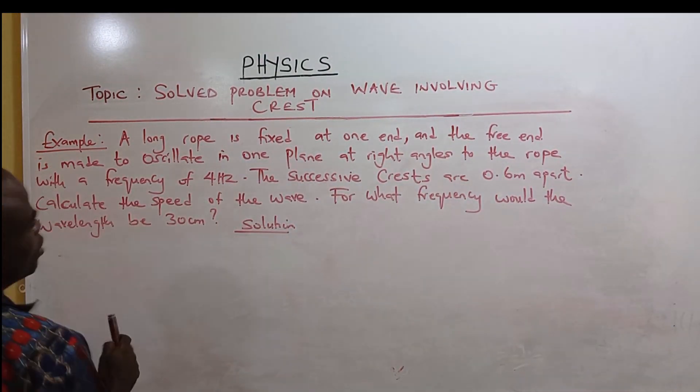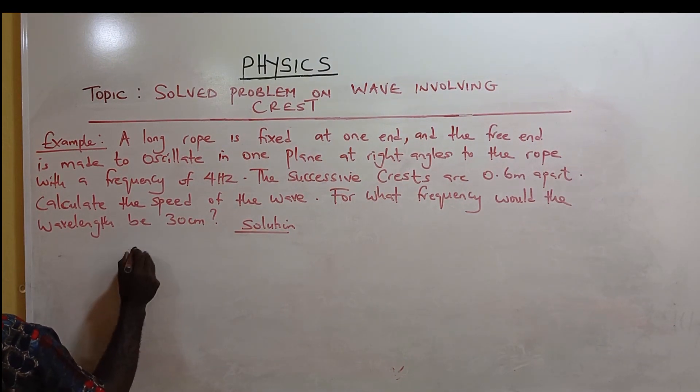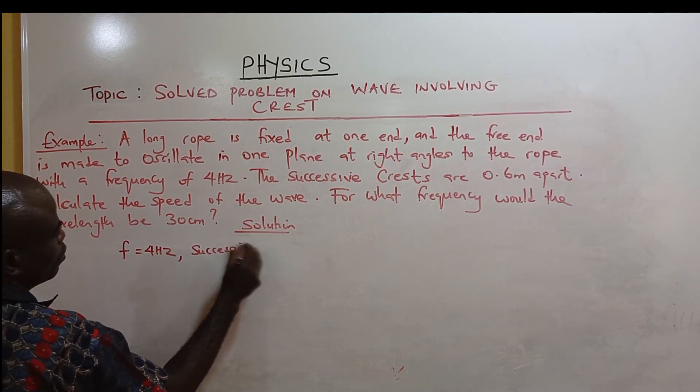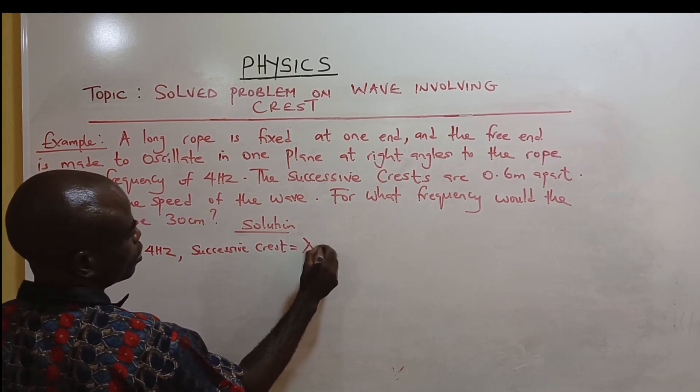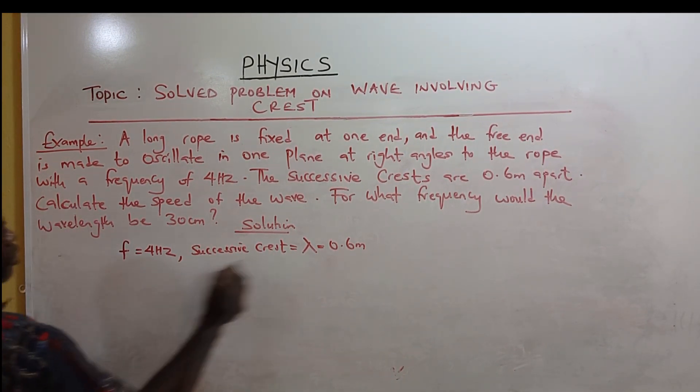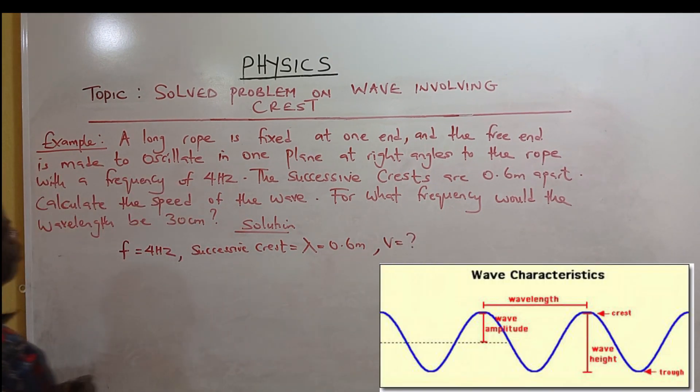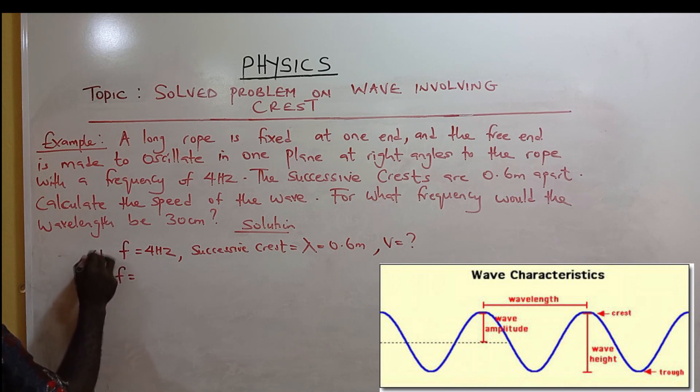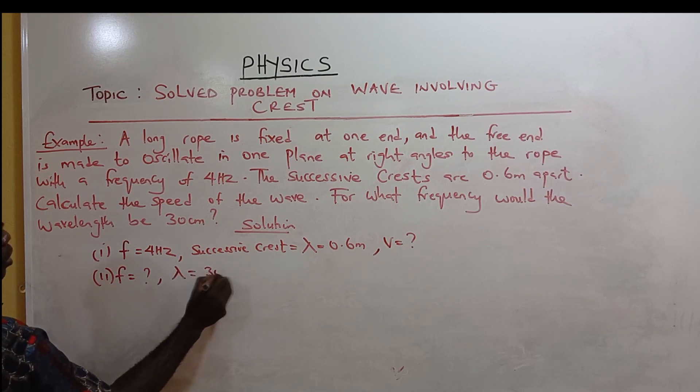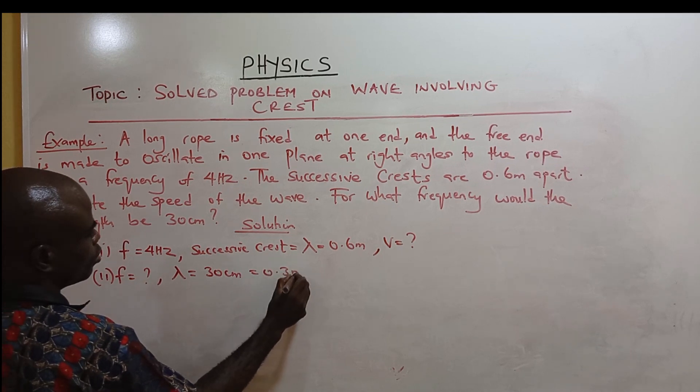What we should do is write the parameters. The diagram above shows wavelength between two successive crests. The wavelength is 30 centimeters or 0.3 meters.